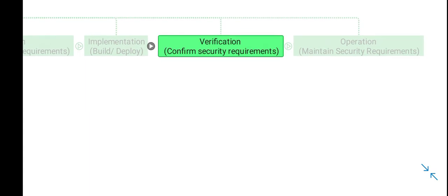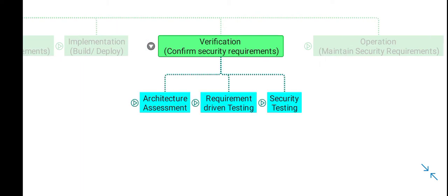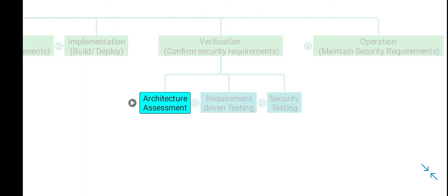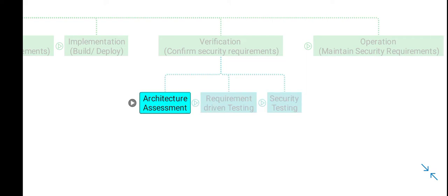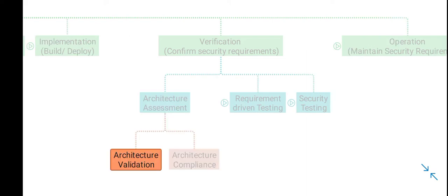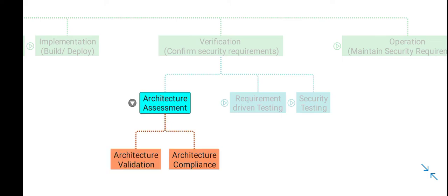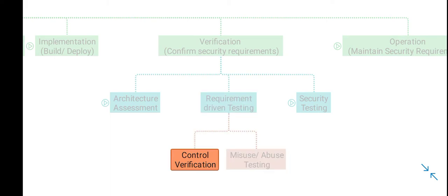The next business function is Verification, to confirm that security requirements are embedded into the software. The practices within this function are Architecture Assessment, Requirement-Driven Testing, and Security Testing. Within Architecture Assessment you validate that the architecture meets your security requirements and is compliant with different organizational policies. In Requirement-Driven Testing you perform validation of security controls and conduct misuse case or abuse case testing, inputting malformed inputs into the software to check its response.